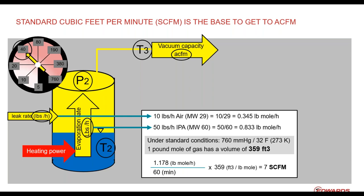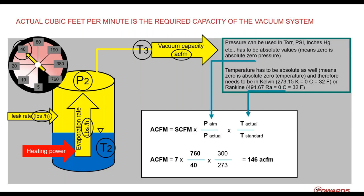In this example, we land at 7 standard cubic feet per minute (SCFM) — that's the firm ground to stand on. Standard cubic feet per minute is the volumetric equivalent of the mass flow at standard conditions — atmospheric pressure and 32°F. Actual cubic feet per minute (ACFM) is where the vacuum pump lives; that's the design point for the vacuum pump. SCFM is corrected by two values: instead of standard pressure, we use actual pressure, and instead of standard temperature, we use actual temperature. That's how you convert SCFM to ACFM.